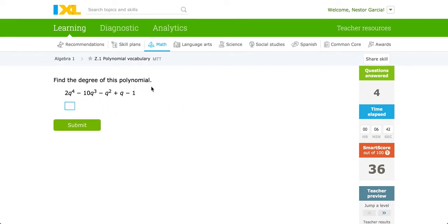Find the degree of this polynomial. Again, look for the base with the highest exponent, which in this case is 4.